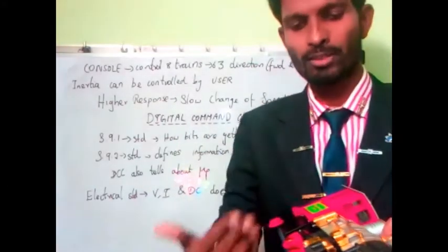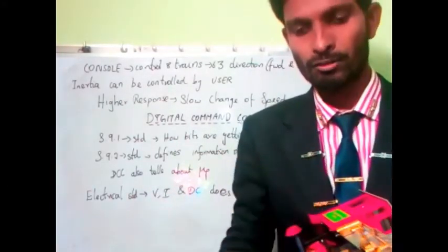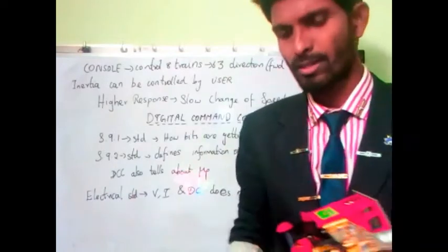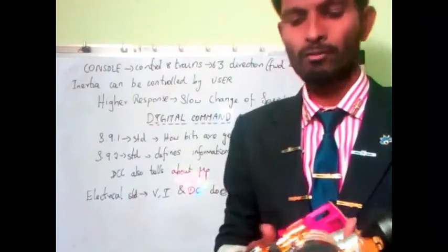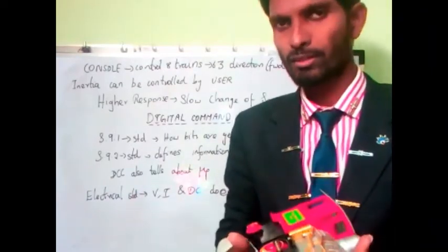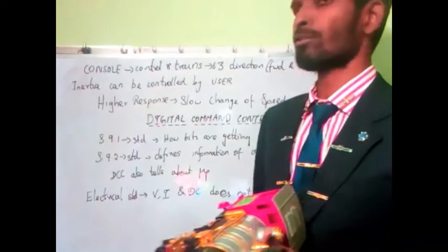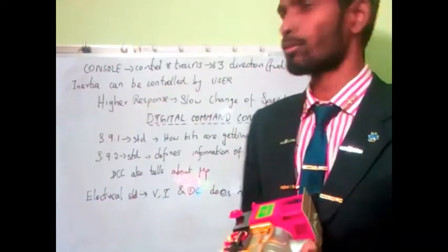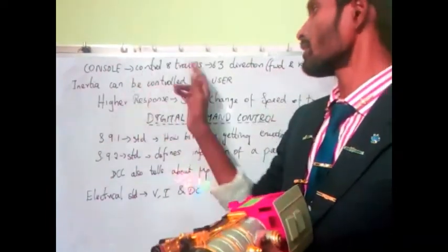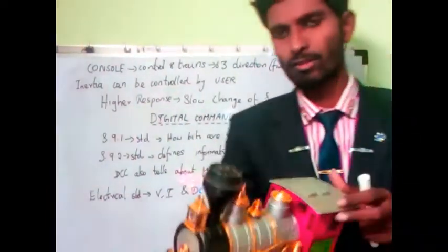Whatever they are expecting from the train and from the train server, it has to go through the rails. We saw about controls one by one. Last class we saw about the console — the console means a control train in 63 directions.